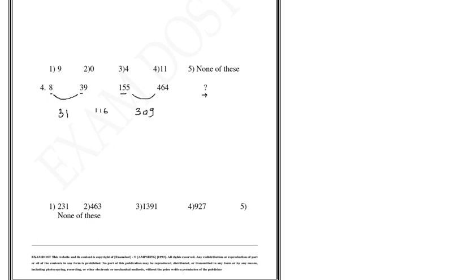155 minus 39 is 116 and 155 minus 464 is 309. As we see that we cannot find any similarity, so you go ahead and subtract these numbers once again.